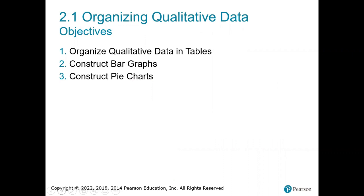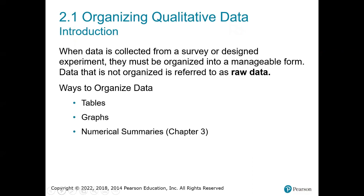We'll cover how to construct bar graphs and pie charts. Anytime you collect data and just put it in a list with no organization, it's called raw data — it's literally just every single response listed together. What you can do is take that data and put it into a table, then take that table data and make it into a graph. We'll eventually learn about numerical summaries in Chapter 3.